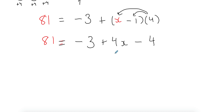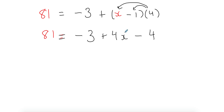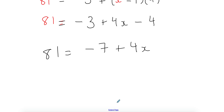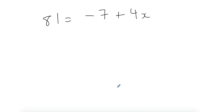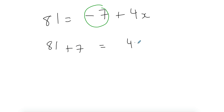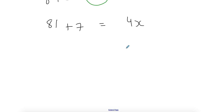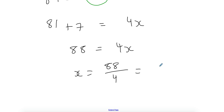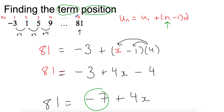You can use n if you want — I want you to get comfortable with different letters. Then simplify: negative 3 minus 4 gives negative 7, plus 4x. Solving the equation, dealing with the negative 7 first: 81 plus 7 equals 4x, so 88 equals 4x. Divide by 4 and we get 22. So the position of 81 is 22 — it's the 22nd number.